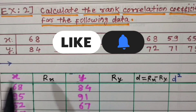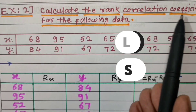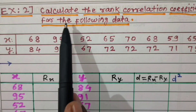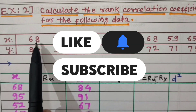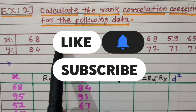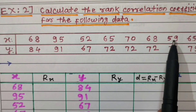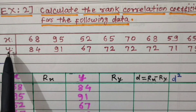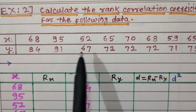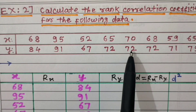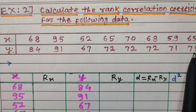Example number 2: Calculate the rank correlation coefficient for the following data. Values of variable x are 68, 95, 52, 52, 65, 70, 68, 59, 65, and values of variable y are 84, 91, 67, 72, 72, 72, 71 and 79.